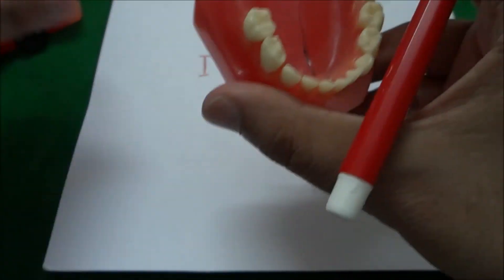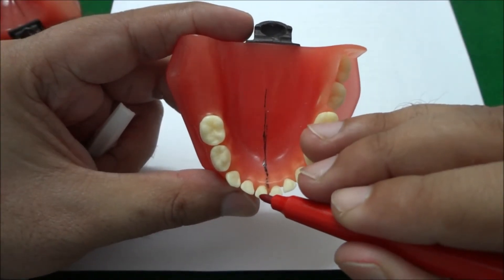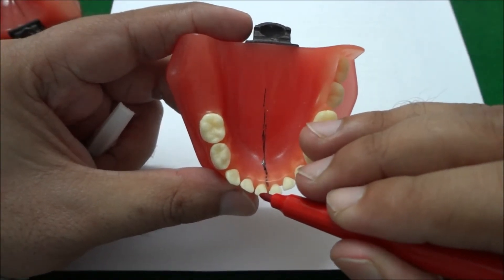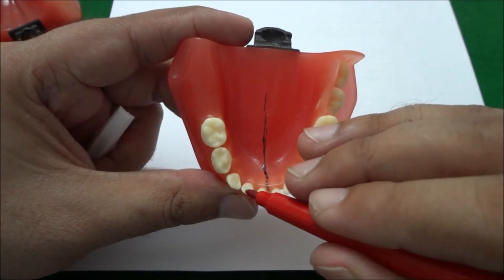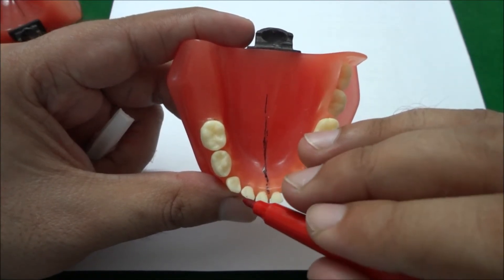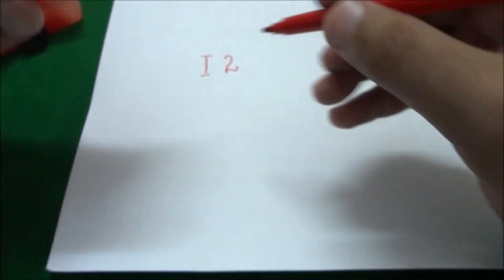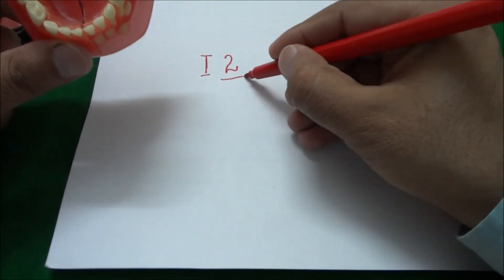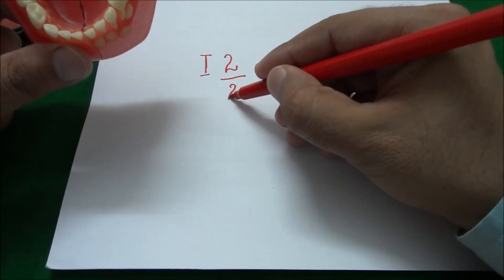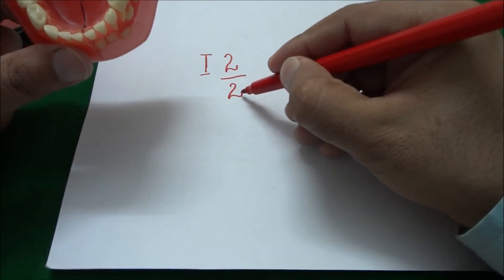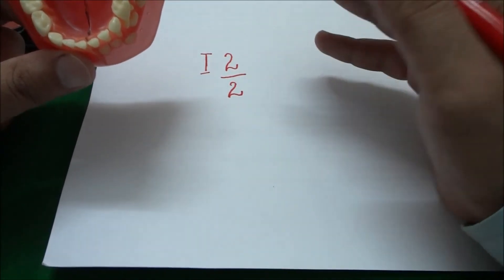Similarly, in the mandibular arch in the right quadrant we have two incisors in each quadrant. This one is the first incisor or the central, and this one is the second incisor or the lateral incisor. So below this we will write 2, indicating the mandibular central and lateral incisor in the right quadrant.